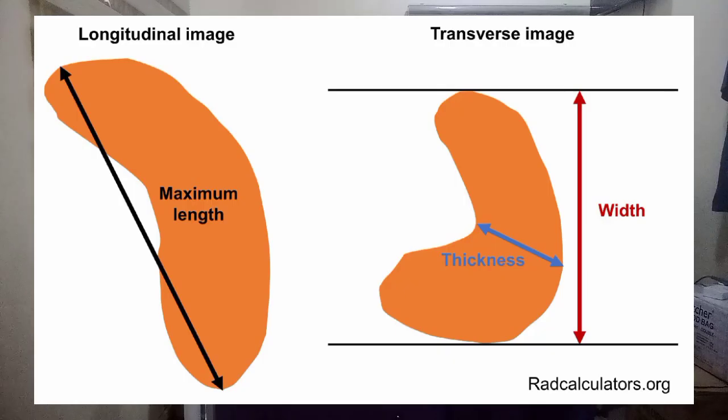There are a wide range of spleen sizes. Intercostal scanning provides the most reliable measurements of splenic dimensions. The length is obtained by measuring the largest distance in the sagittal, parasagittal, or coronal plane, and should be equal to or less than 11 cm.